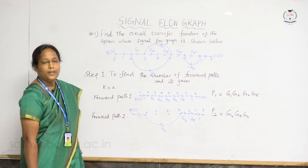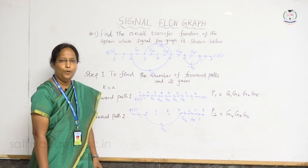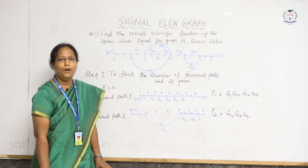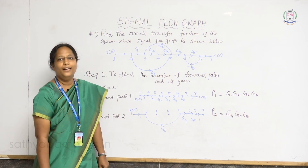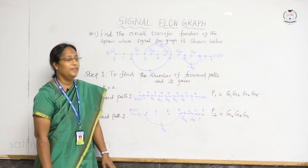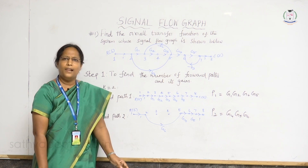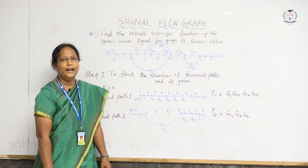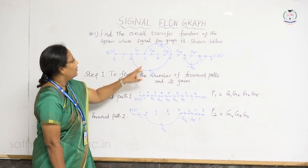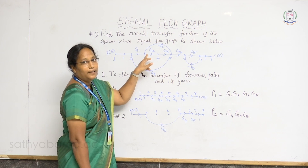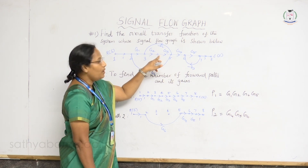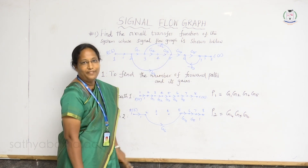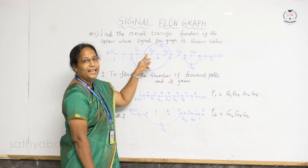Then forward path. Forward path is a path which starts from the input node and ends at the output node without passing any node more than once. Then individual loops. An individual loop is a closed path which starts from one node, travels along the branches of the signal flow graph, and again terminates at the same node without passing any node more than once. For example, consider nodes 3, 4, 5, and back to 3 — this is a closed path starting from node 3, traveling to 4 and 5, and coming back to 3, so this is called an individual loop.